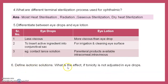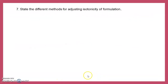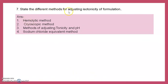Define isotonic solution. What is the effect if tonicity is not adjusted in eye drops? A solution having the same osmotic pressure as that of blood plasma is called an isotonic solution. If a solution is not adjusted to be isotonic, it produces irritation and damage to the eyes. Different methods for adjusting tonicity include: hemolytic method, cryoscopic method, methods for adjusting tonicity and pH, and the sodium chloride equivalent method.